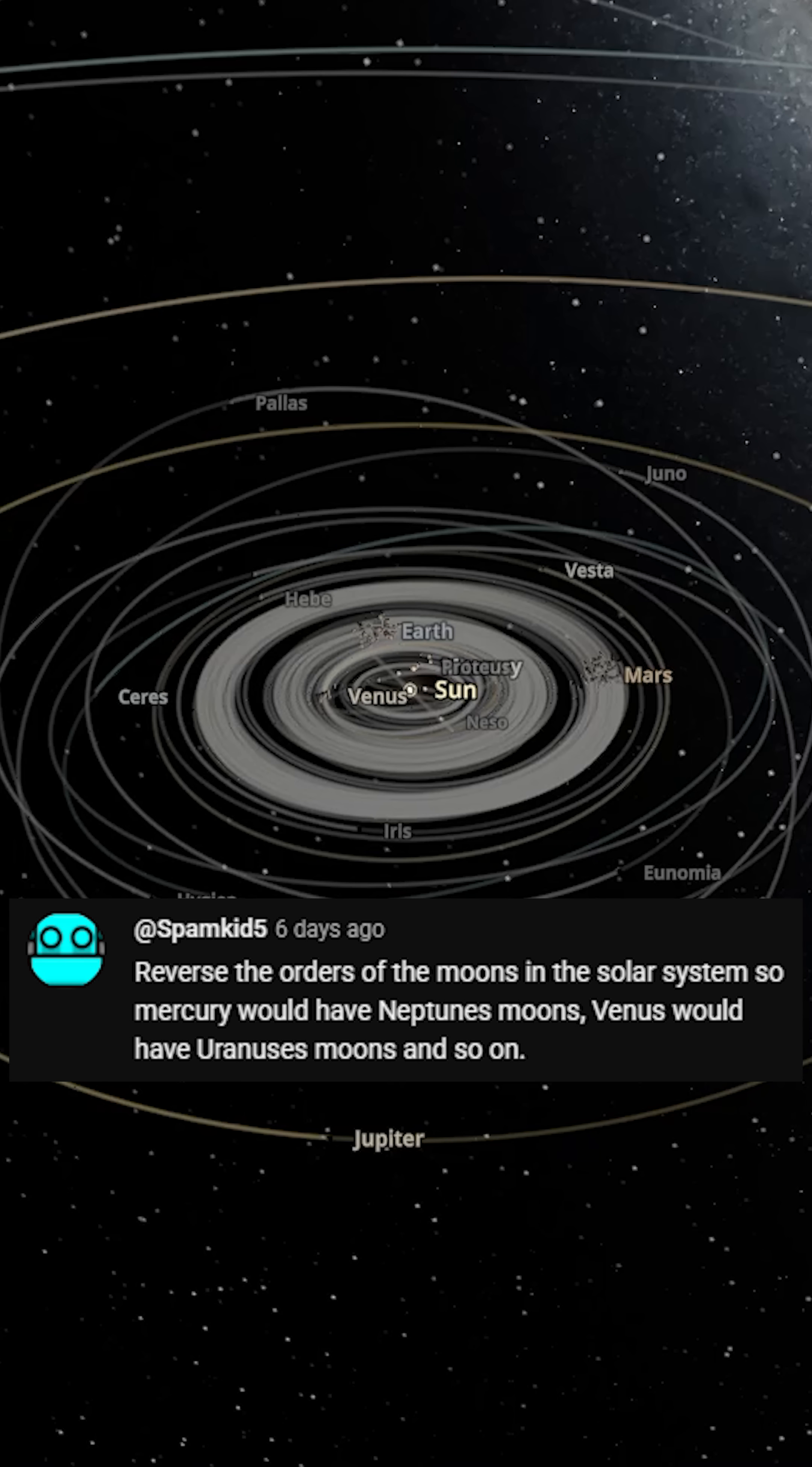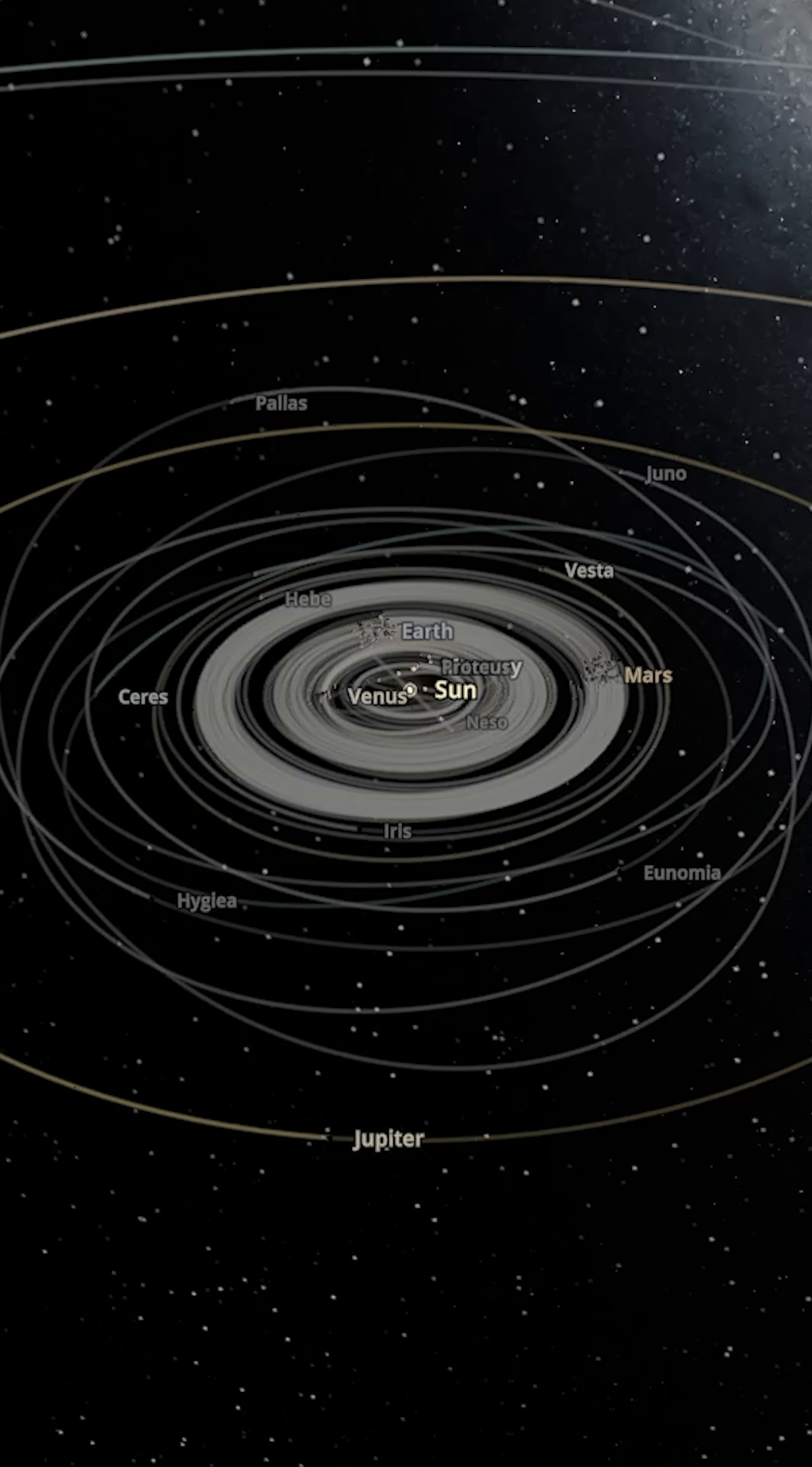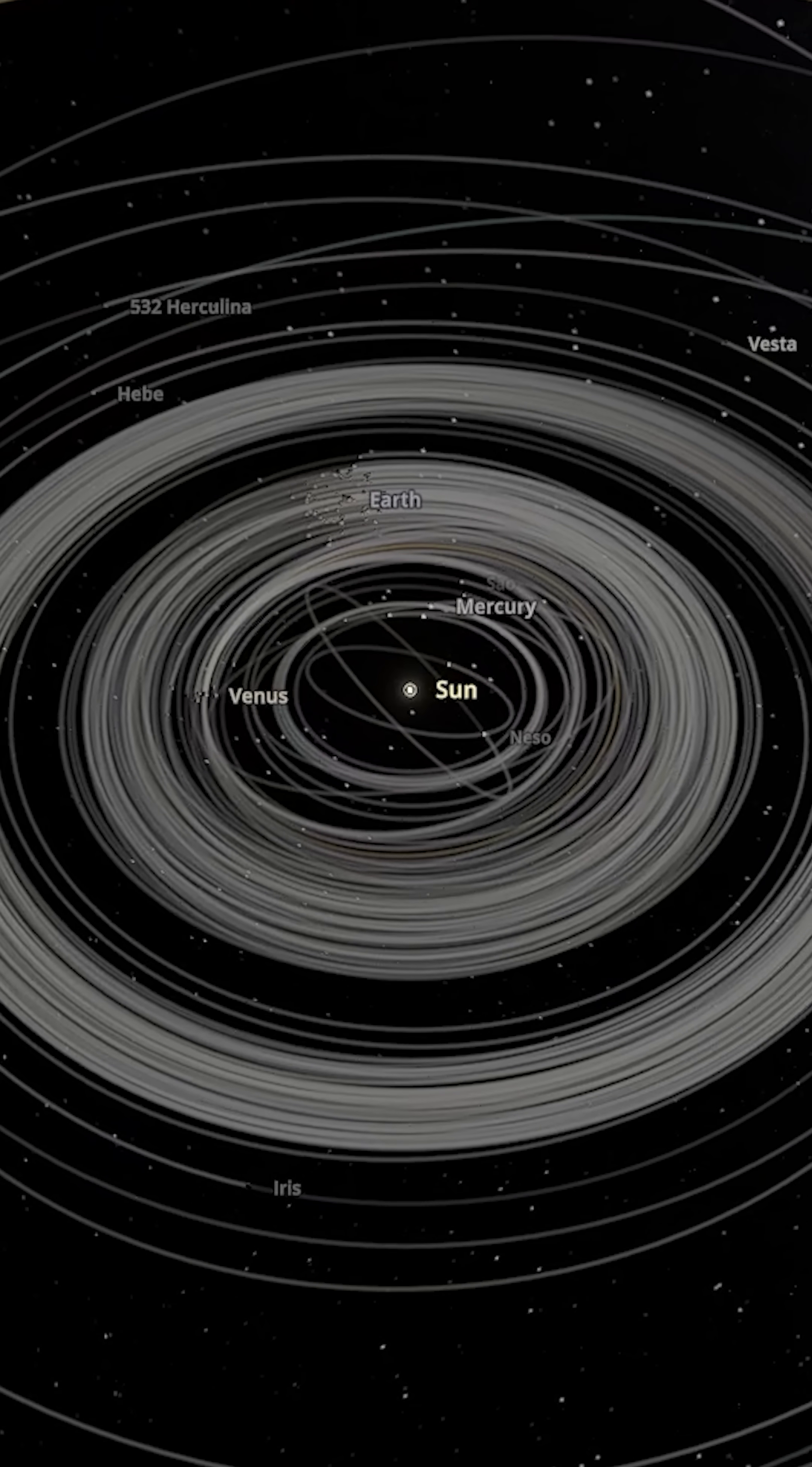But first, the orders of the moons in the solar system. So Mercury would have Neptune's moons, Venus would have Uranus's, and so on. Okay, so I've done exactly that and as you can see, the orbits are already looking a bit wild in the inner solar system.